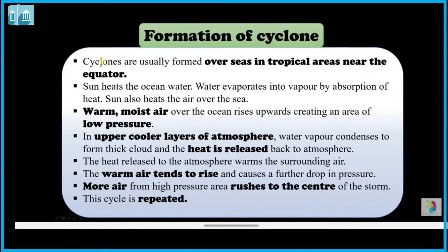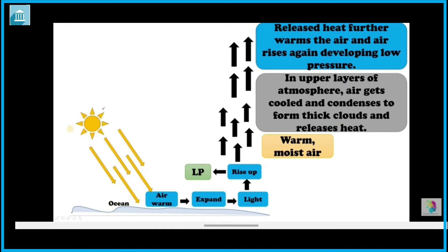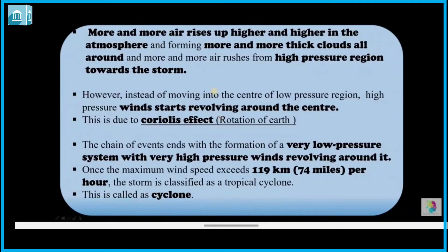Warm air from the high pressure area rushes to the center of the storm. This cycle repeats: sunlight warms the ocean, warm air expands and rises, creating low pressure. The air further condenses, releasing heat, which develops even more low pressure, and more and more thick clouds form all around.